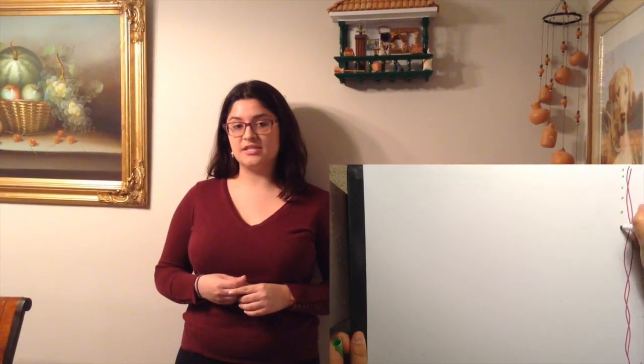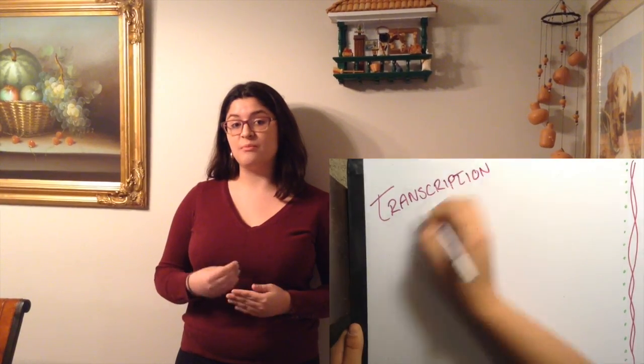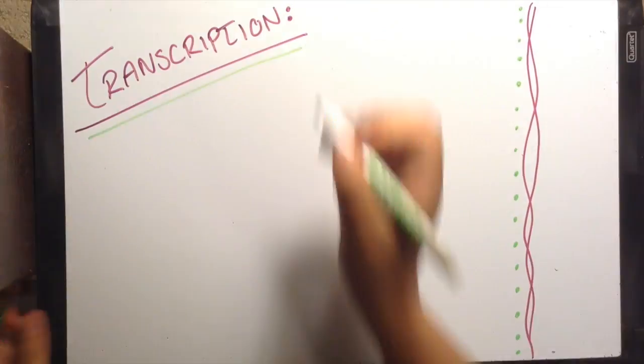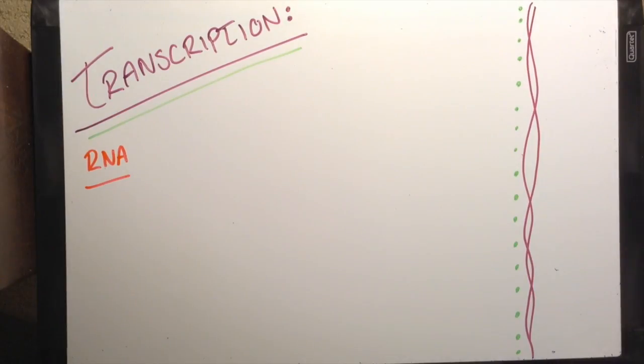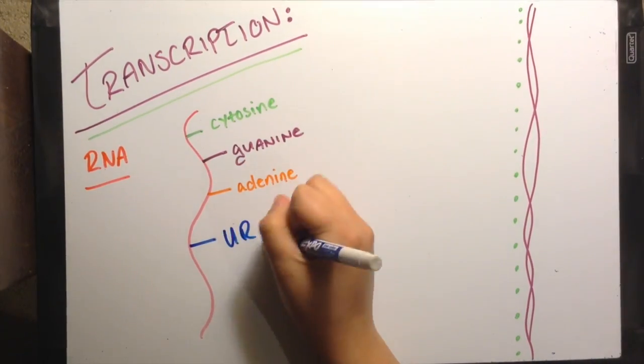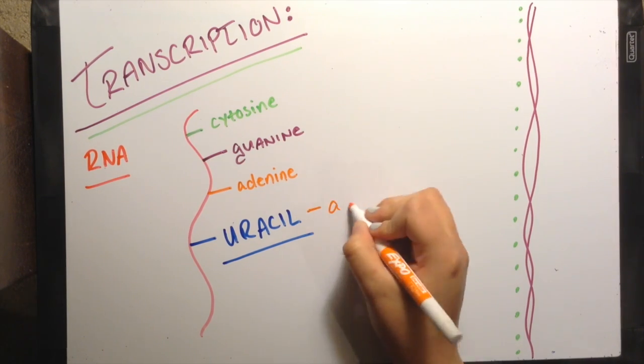Next up is transcription, the process of writing down the genetic instructions to create a protein from DNA. The instructions are written as RNA or ribonucleic acid. RNA is a polymer with nucleotides joined by phosphodiester bonds. The structure has a ribosugar, phosphate, and a base. RNA differs from DNA by using the base uracil instead of thymine to pair up with adenine.